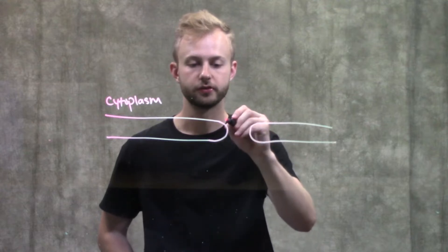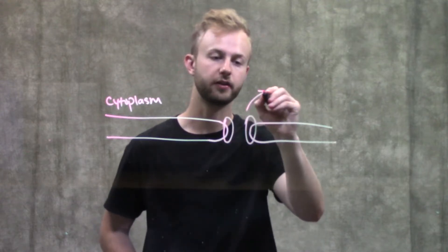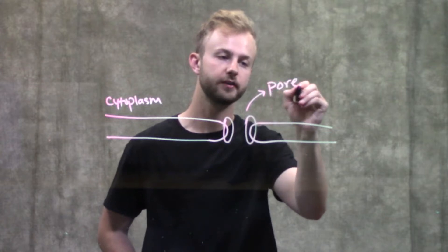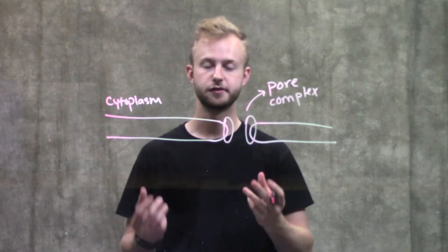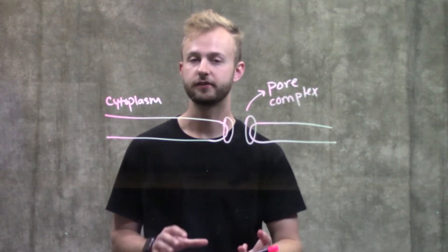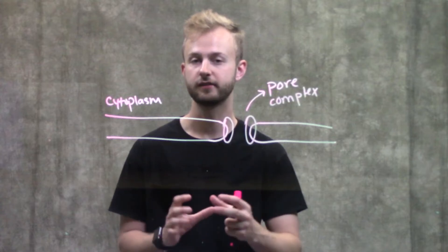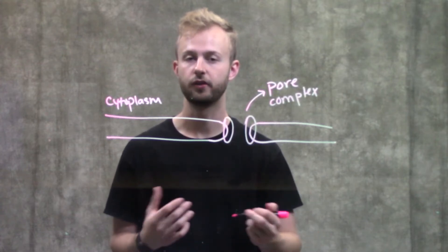At these nuclear pores, we have a complex of proteins that forms something called a pore complex. These are really important because they provide specificity as to what is allowed to enter and leave the nucleus. If we have our genetic material inside the nucleus, we really want to make sure that it's protected and nothing gets in that we don't want.